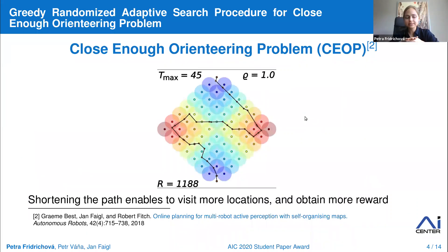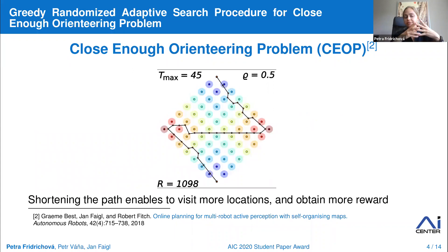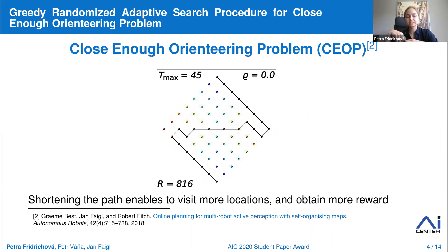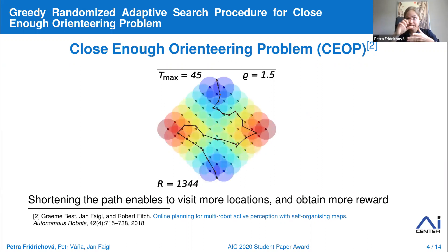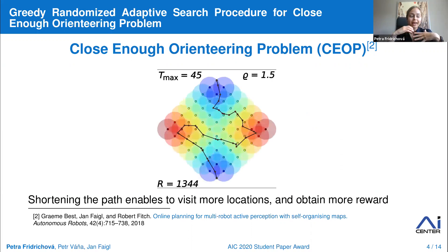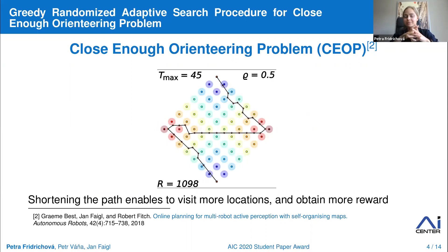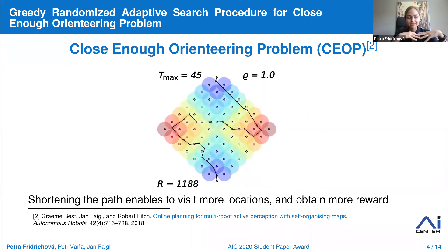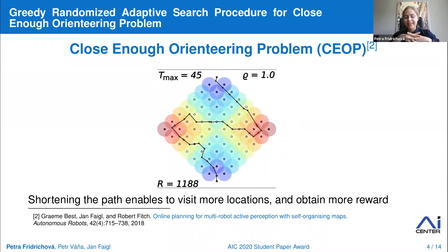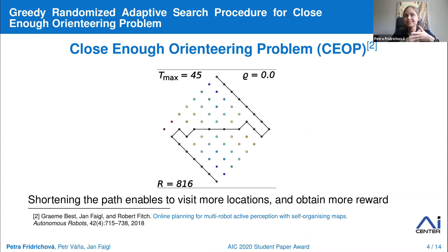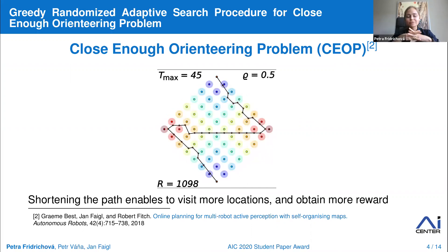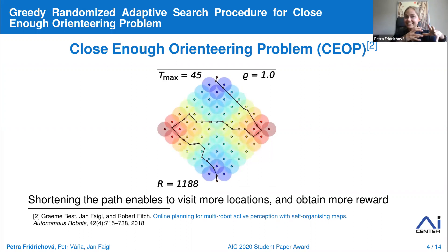Relatively recently, an extension of OP was introduced to account for a sensing radius, which allows shortening the path and thus increasing the collected reward. You can see this in the animation — with increasing radius, the reward increases. This generalization is called the Close Enough Orienteering Problem, CEOP, where the locations expand to a disk sensing area. The original OP is strictly combinatorial, but CEOP also contains continuous optimization of the path connecting the selected sensing areas.